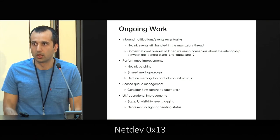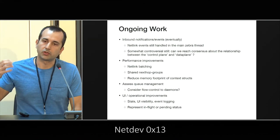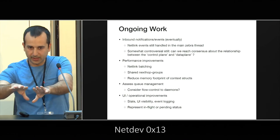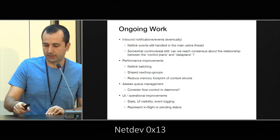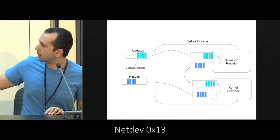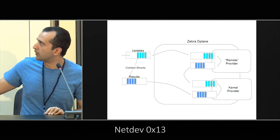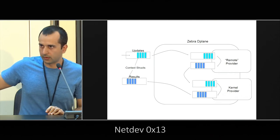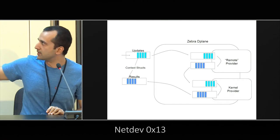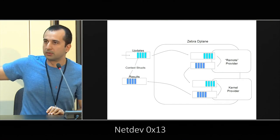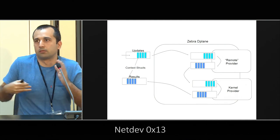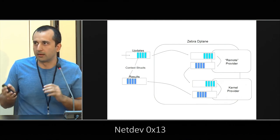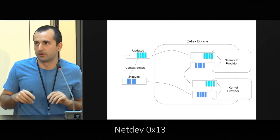Follow-up question: But you said you might have a remote data plane? Yes — but the remote data plane provider would be a piece of code that registers itself as part of that chain. The data plane API gives you a way to register code that will receive updates from the Zebra thread. The code that actually sends data to a remote box — and receives responses — would be written by whoever is providing that integration. So you would write the code that sends data to a box and then updates the result back.